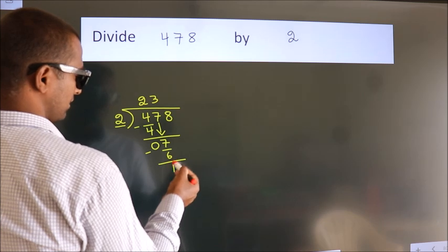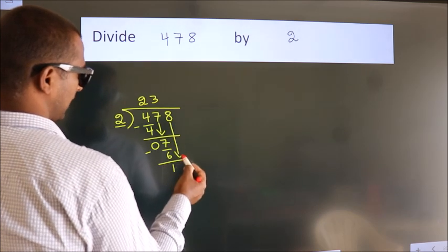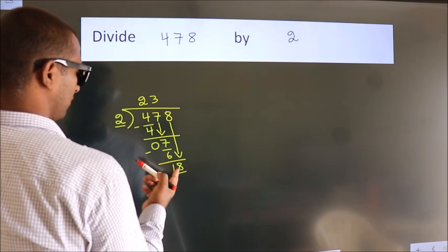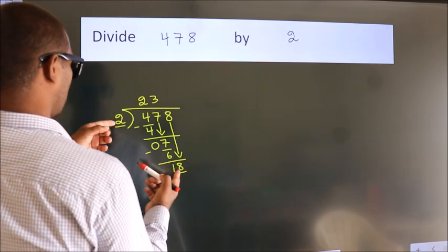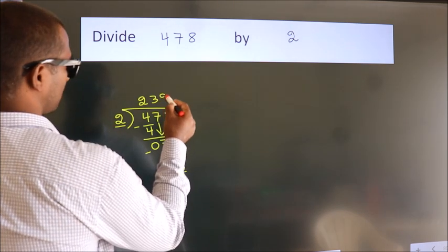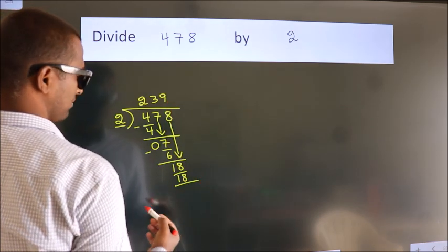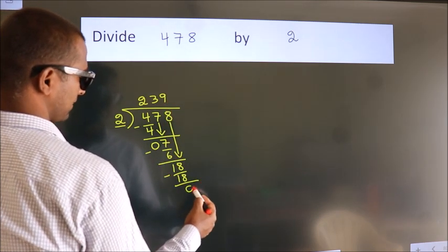After this, bring down the beside number. So 8 down. So 18. When do we get 18? In 2 table, 2 9s, 18. Now we subtract. We get 0.